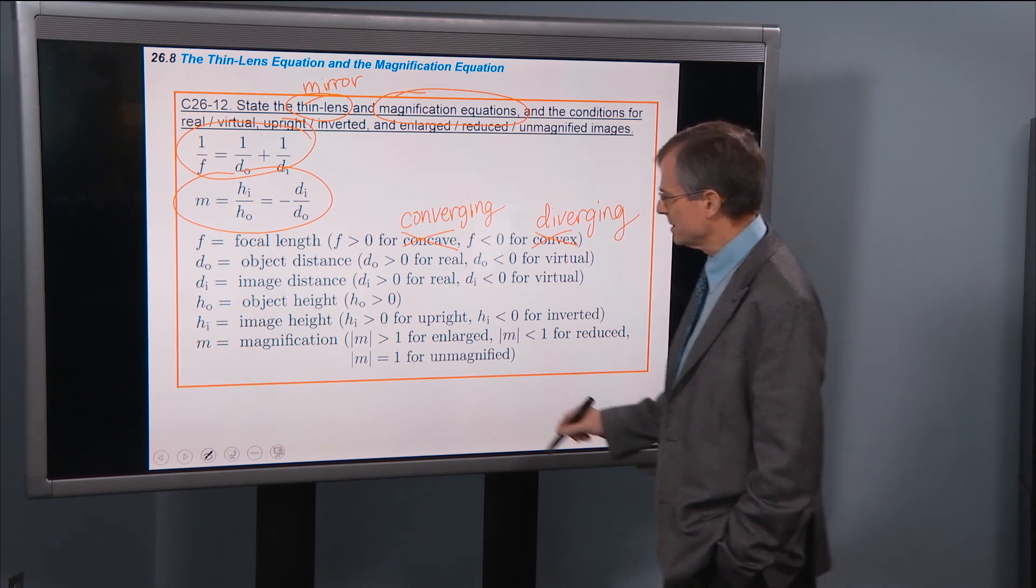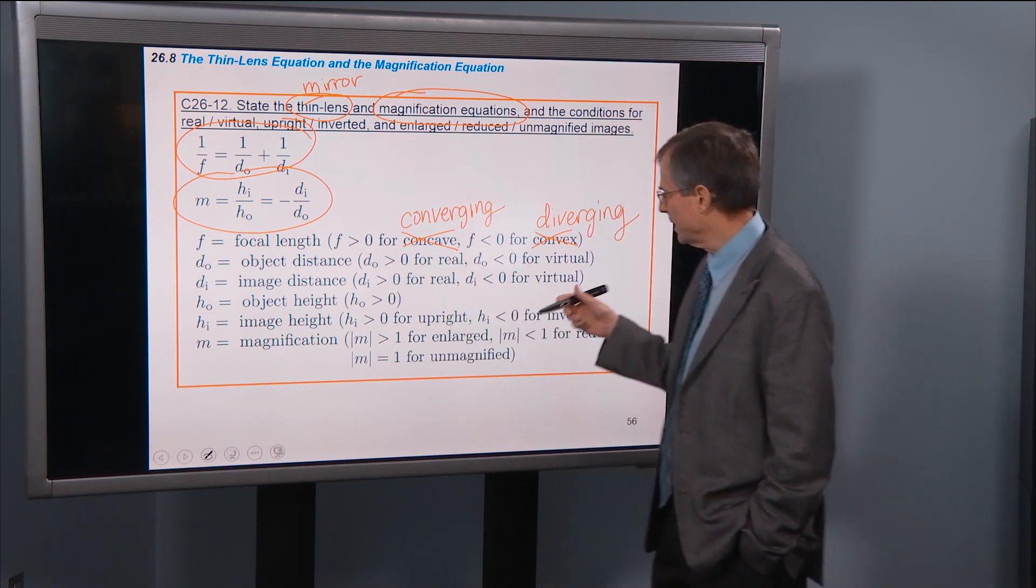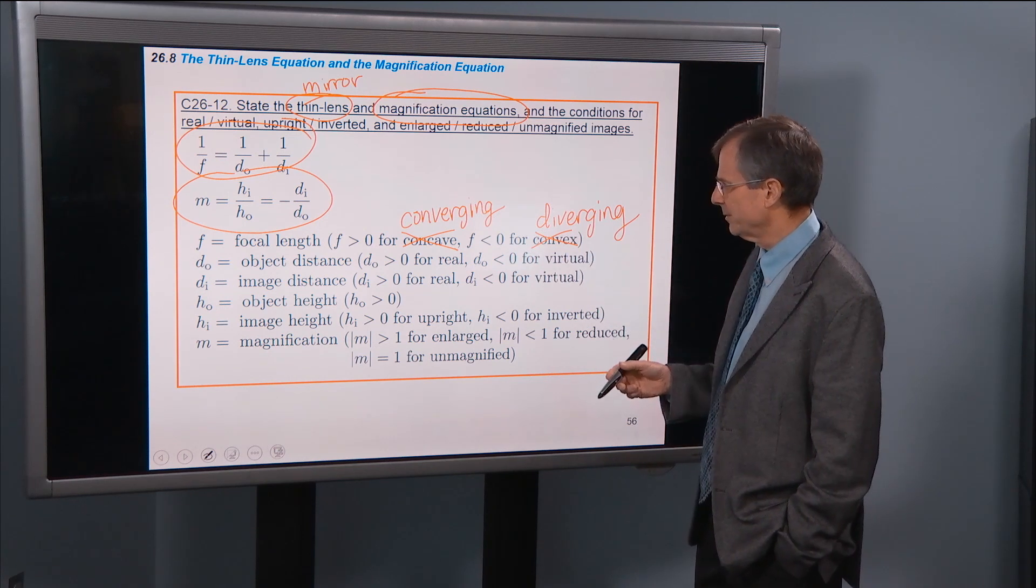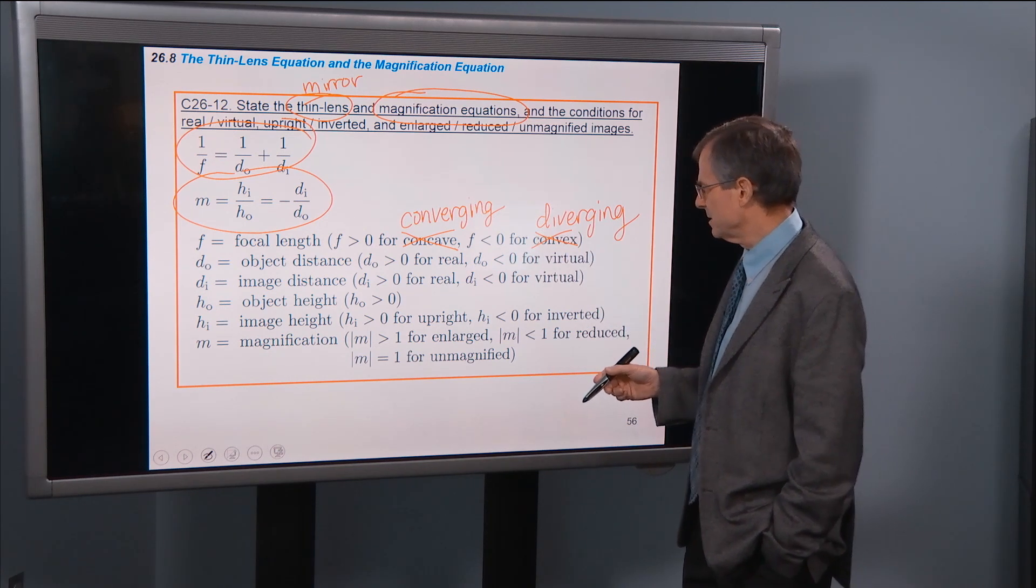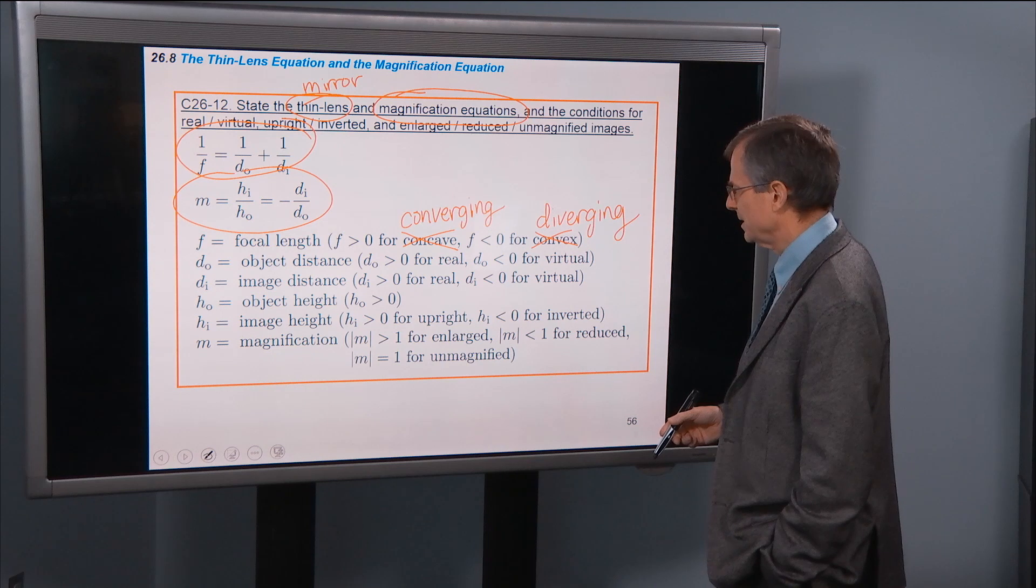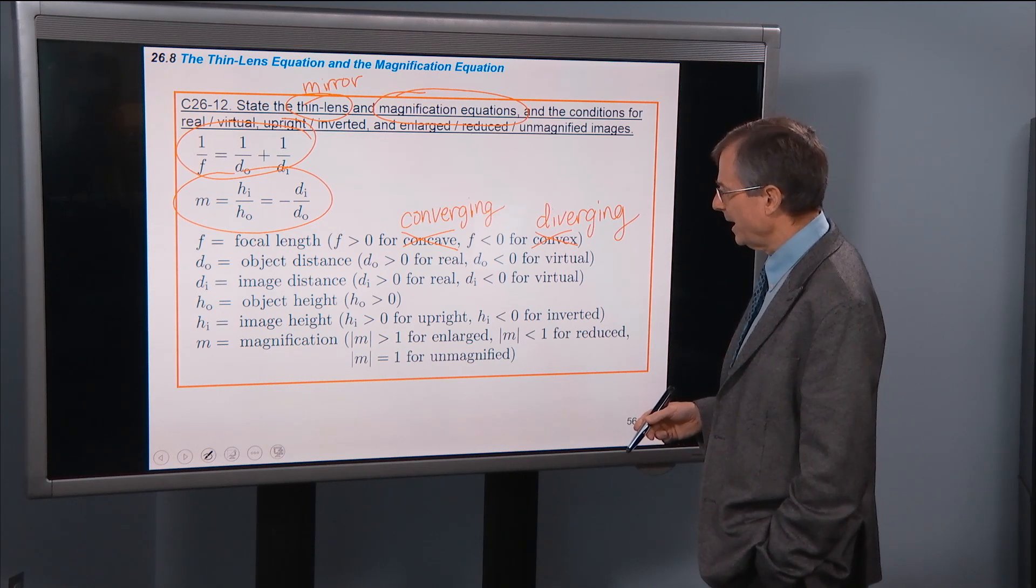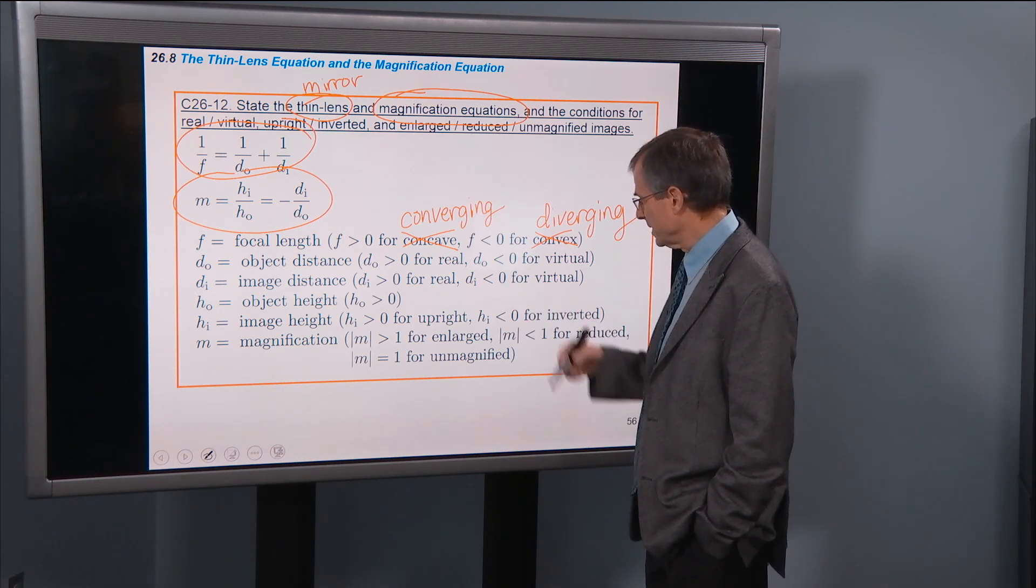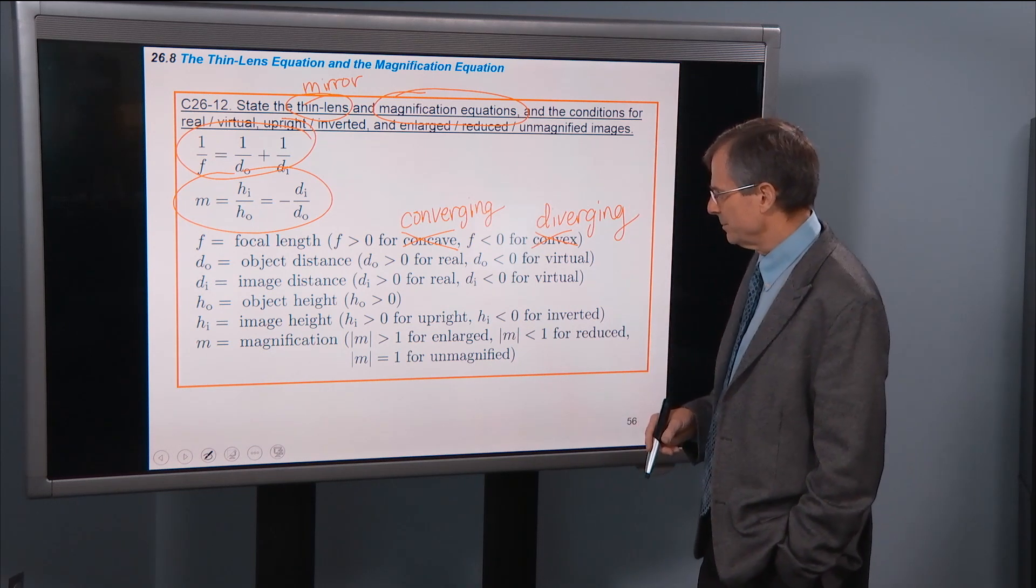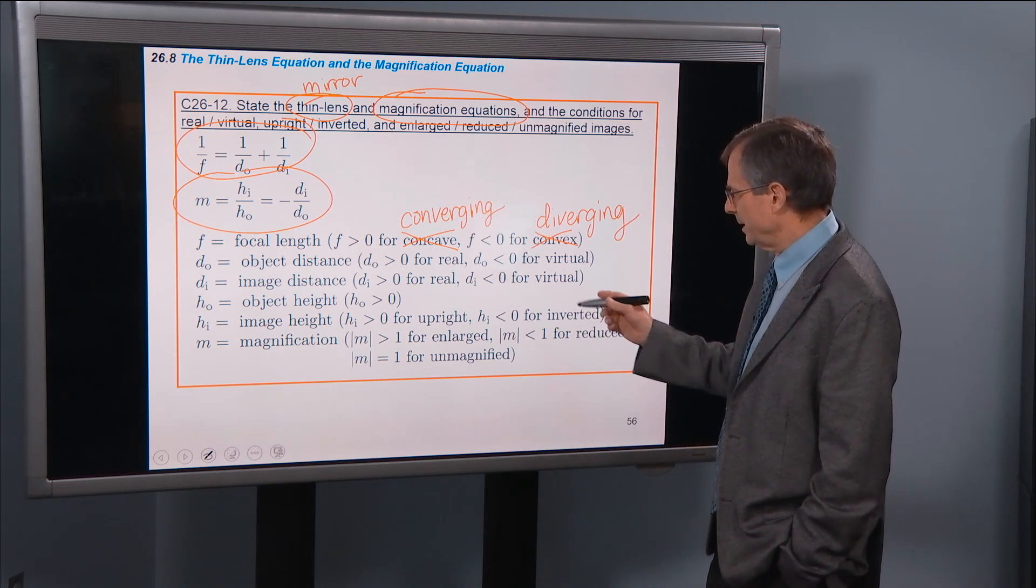Object distance, D0 is greater than zero for a real object, D0 is less than zero for a virtual object. Image distance, etc. Di is greater than zero for real, Di is less than zero for virtual. Object height, image height,